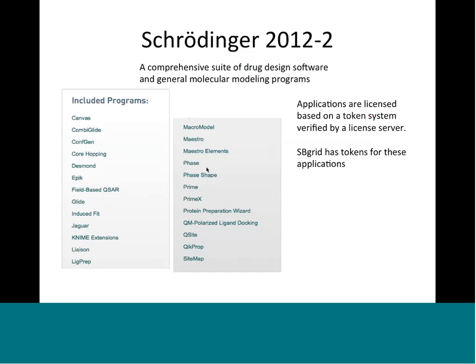We have licenses available for everything within the small molecule discovery suite — I've listed those programs here. The primary interest would probably be for the virtual screening, and the rest of these packages essentially allow you to prepare your libraries or your receptor for screening or to interpret the results. The licensing system works on a token system where we have a set number of tokens and each application has a certain number of tokens allotted to it. When you launch a job, it checks out tokens from our token server, and when the job completes, the tokens are returned.